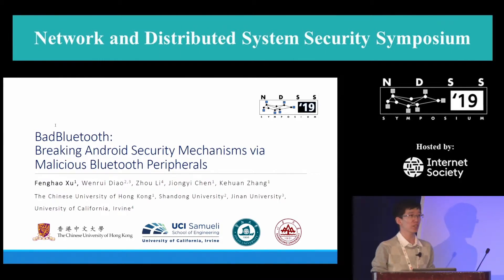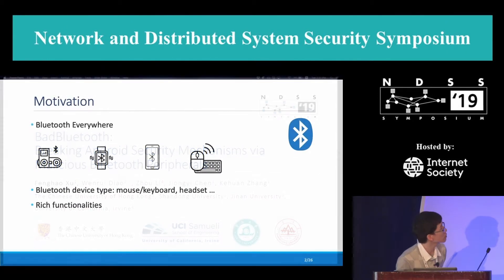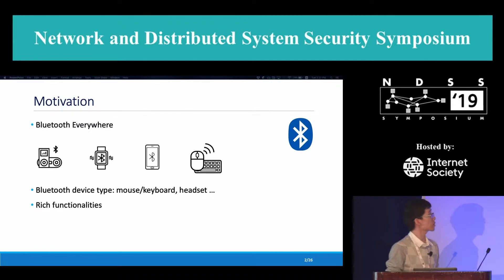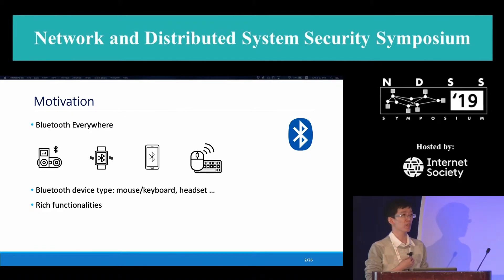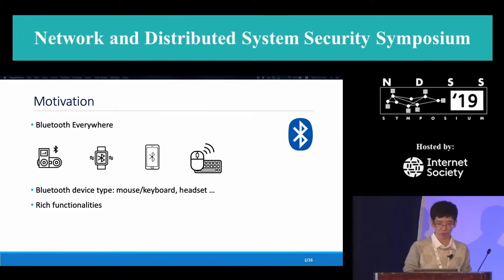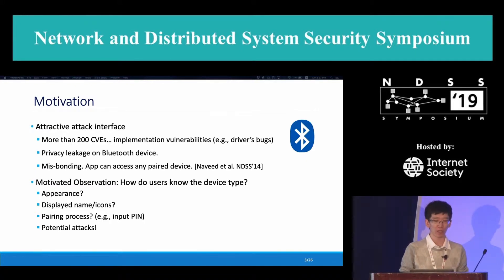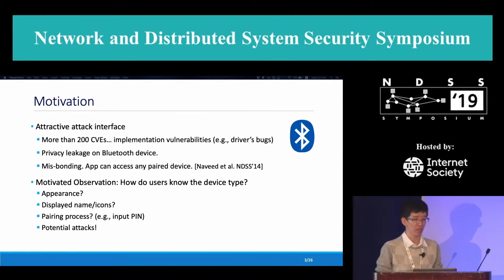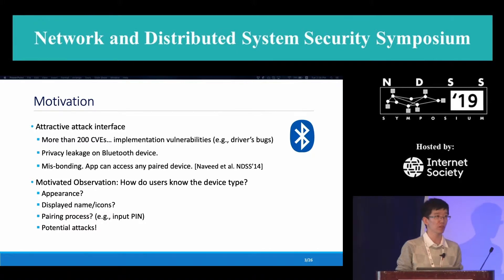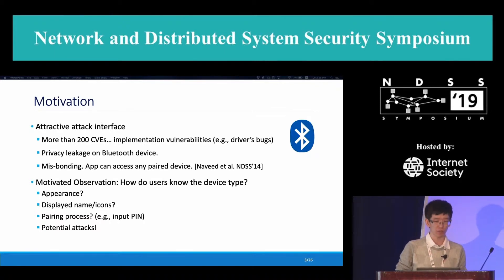Bluetooth as a communication technique is adopted in many kinds of devices which provide rich functionalities — for example, the Bluetooth mouse, Bluetooth keyboard, and Bluetooth handset. However, this kind of open-air channel also attracts many kinds of attacks. There are more than 200 CVEs reported now, and most of them are implementation vulnerabilities, for example low-level bugs in the driver. However, there are also some works showing that Bluetooth devices suffer from the privacy leakage problem.